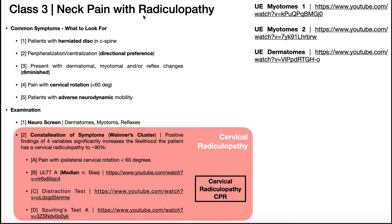Radiculo usually refers to a nerve root. So we're talking about either chemical irritation of a nerve root, or some physical structure is impinging or compressing a nerve root. Those physical structures could be a portion of one of the cervical discs, osteophyte formation which might occur as we age, ossification of the ligamentum flavum, inflammation of the ligamentum flavum, or facet joint hypertrophy.